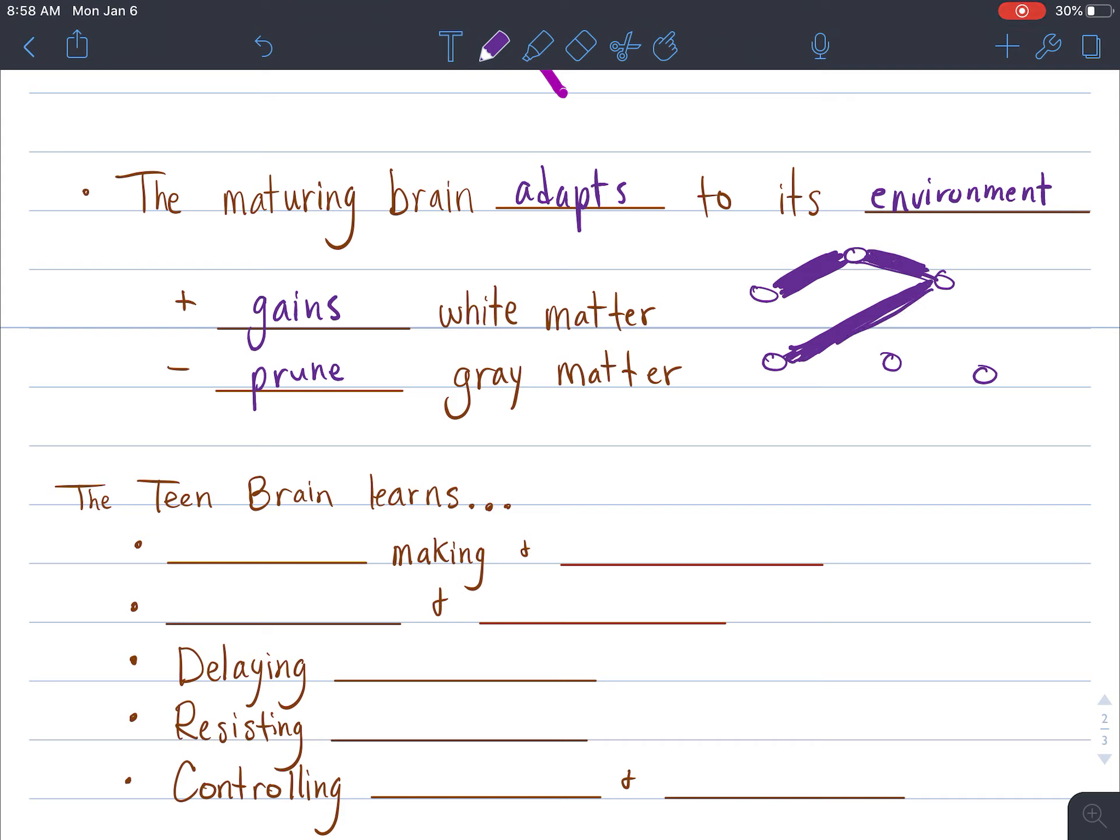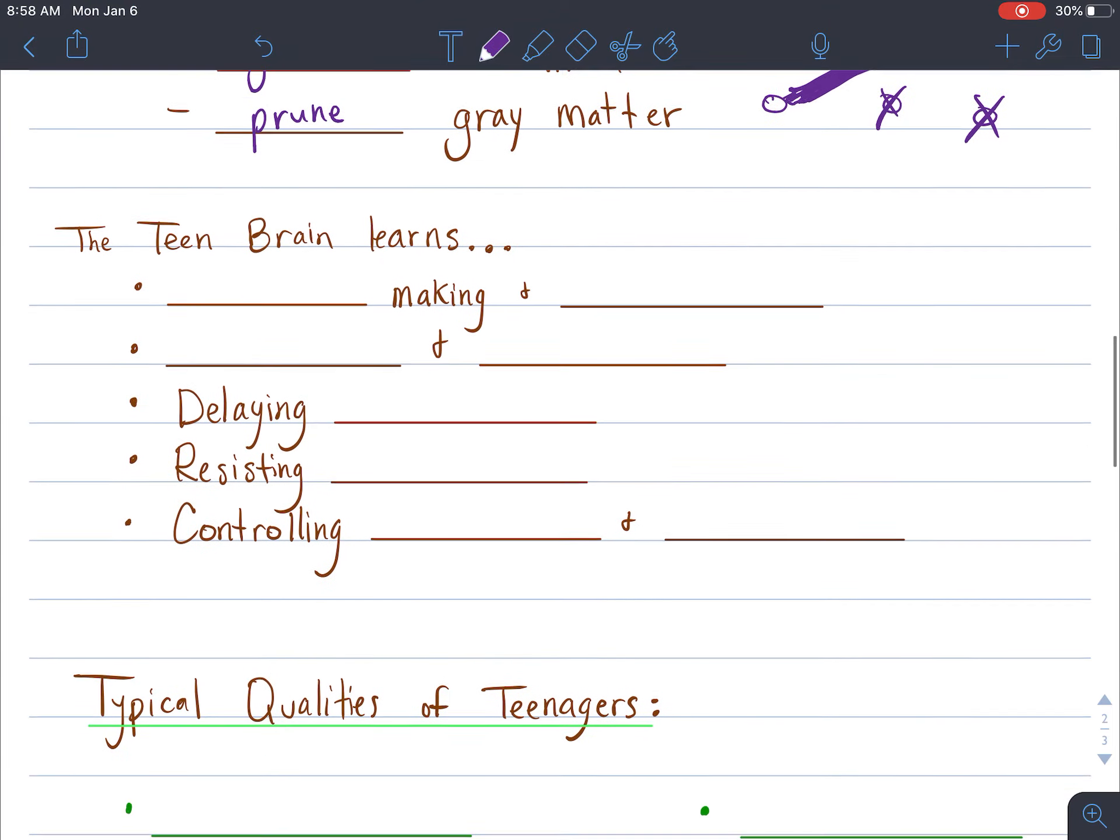Then I'm going to strengthen these connections by adding white matter, which is the myelin between these, so that they become nice and thick and easy to use. And then these two over here that I don't use, my body would prune those and get rid of them because they're not useful for me anymore.